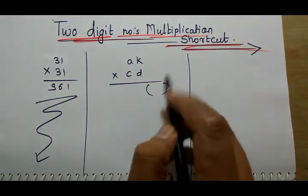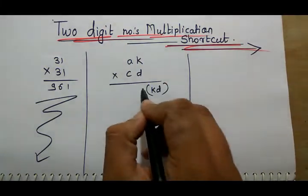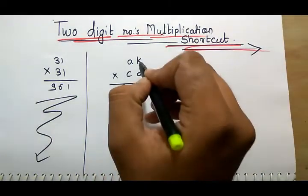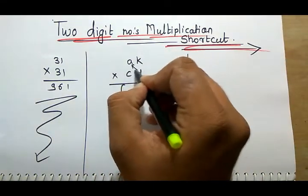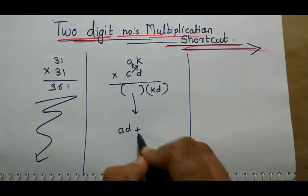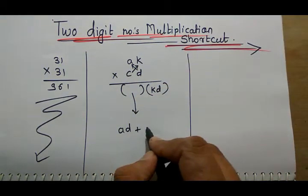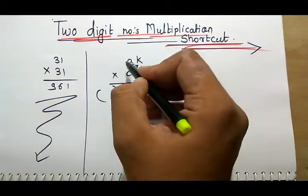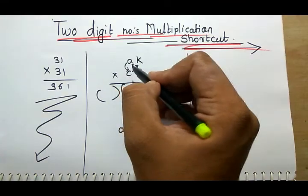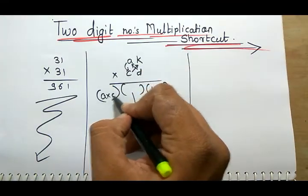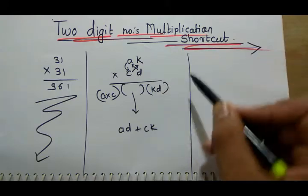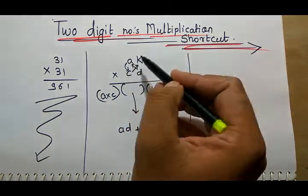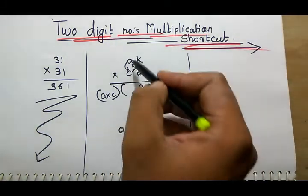Here in unit place will be K into D. Tens place will be criss-cross multiplication, and that is A into D plus C into K. And the hundredth place will be only A into C. I will repeat: unit place will be unit into unit, tens place will be criss-cross multiply, and hundredth place will be A into C.